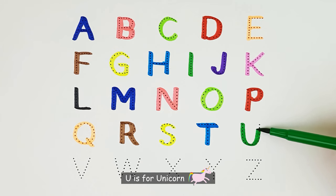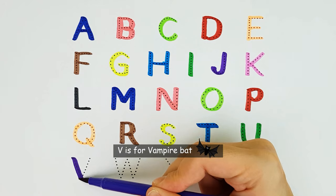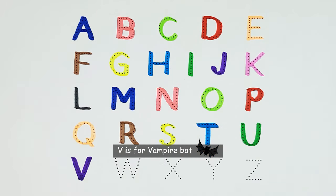U. U is for Unicorn. U. V. V is for Vampire Bat. V.